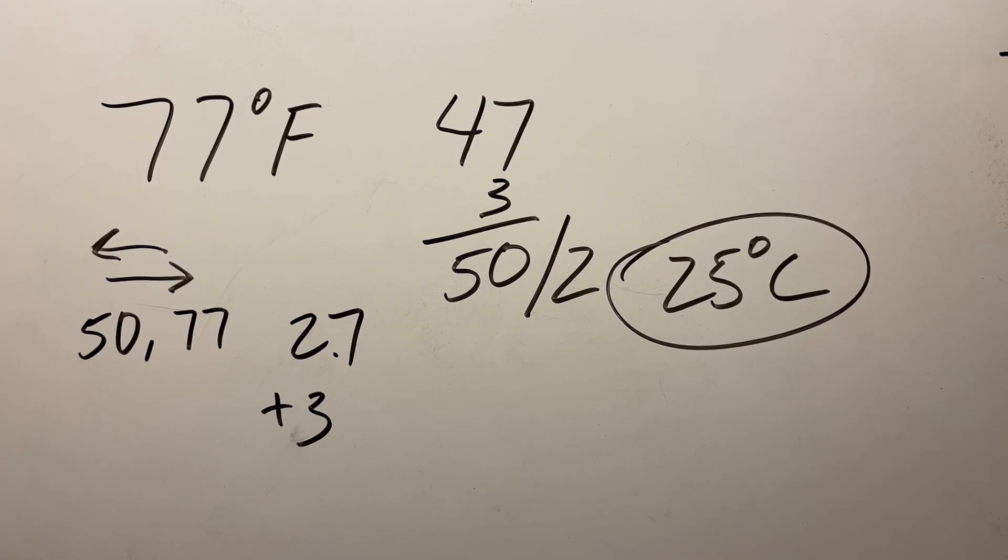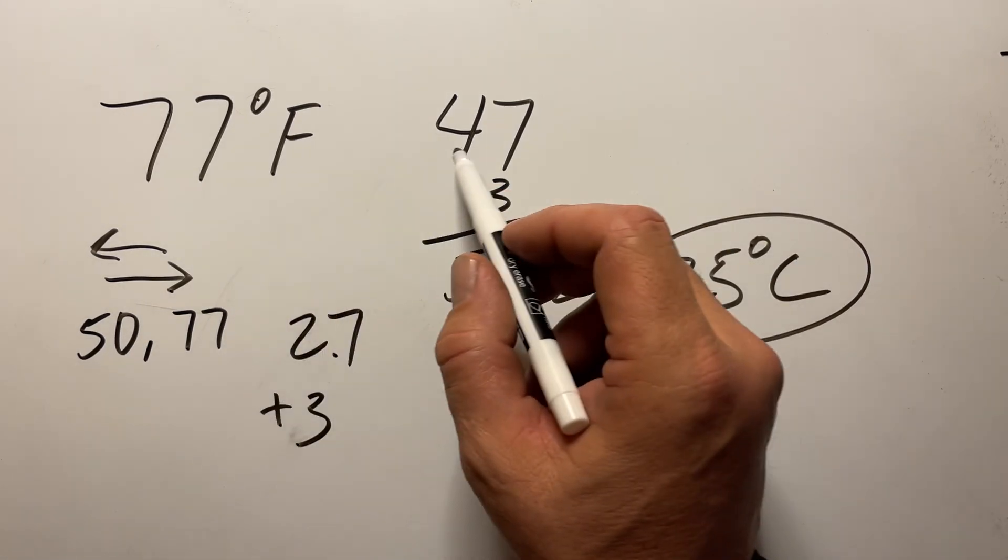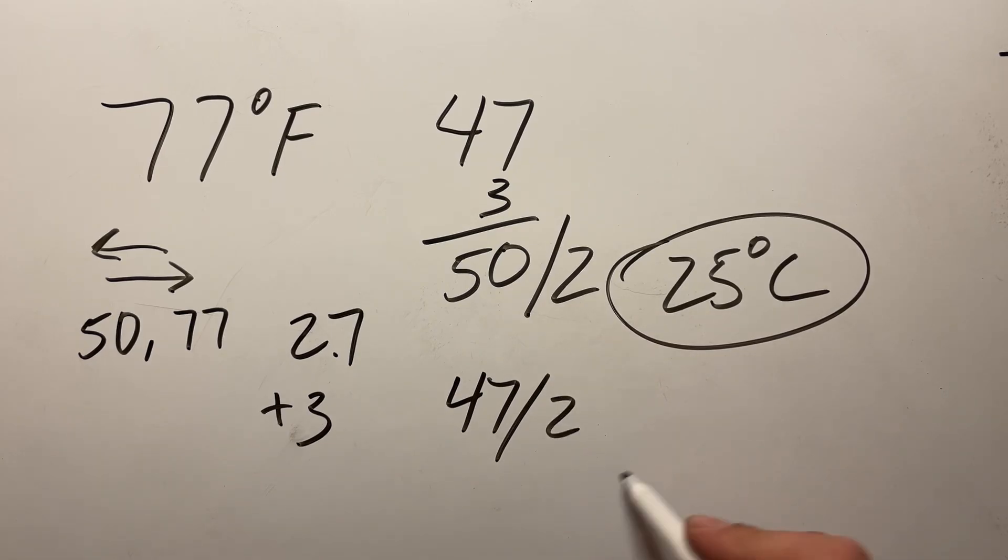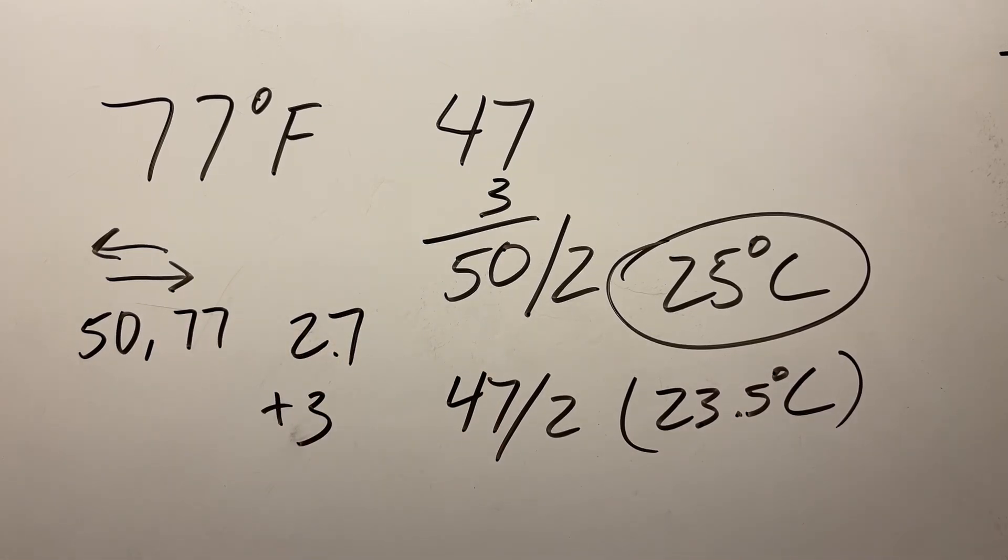So if we just did the regular method where we took 47 and then divided that by 2, that would actually be 23.5 degrees. So you can see that we are already off by 1.5 degrees, and we're only 27 degrees away from 50.